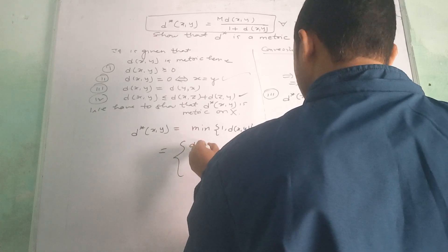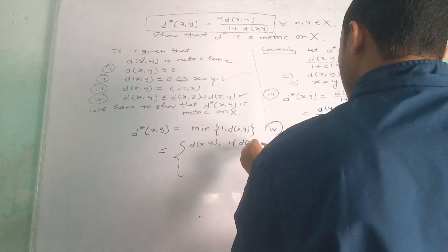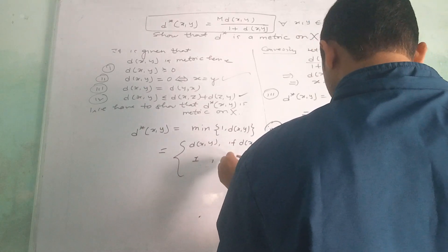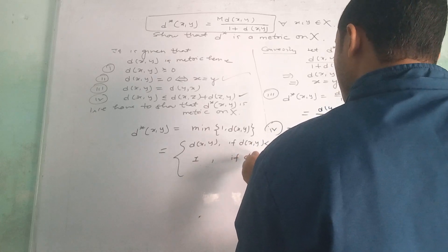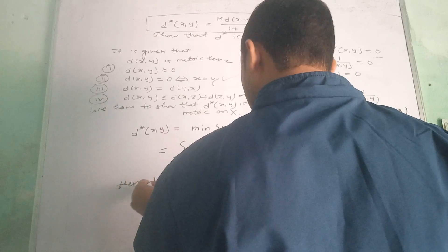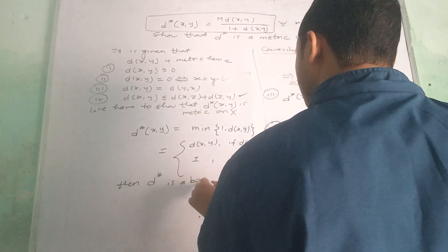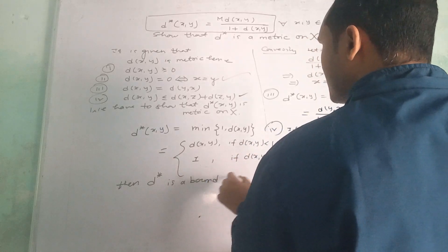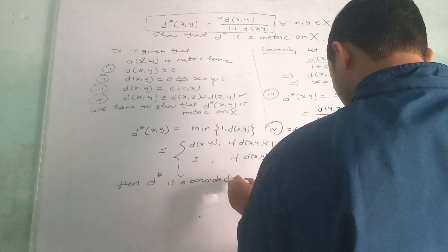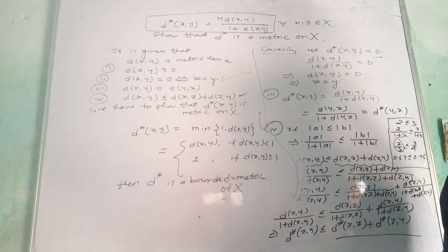dxy — if dxy is less than 1, then d* is a bounded metric on capital X. This is an interesting question.